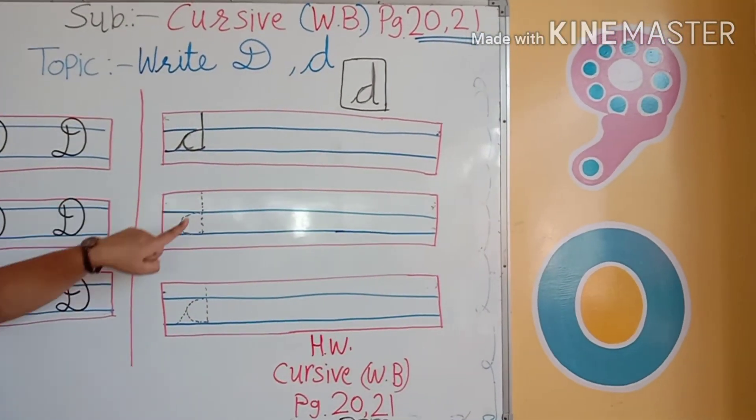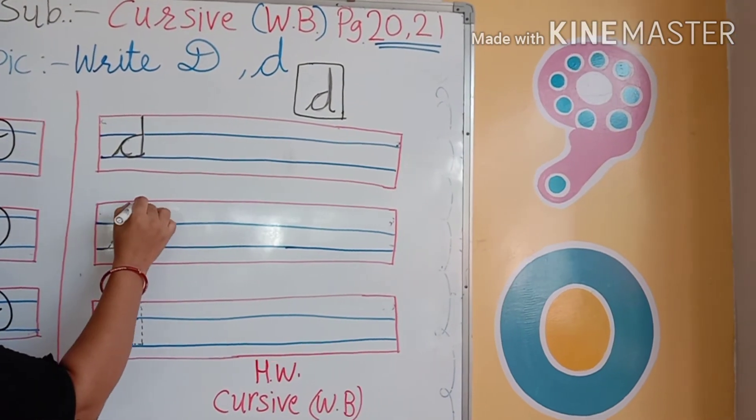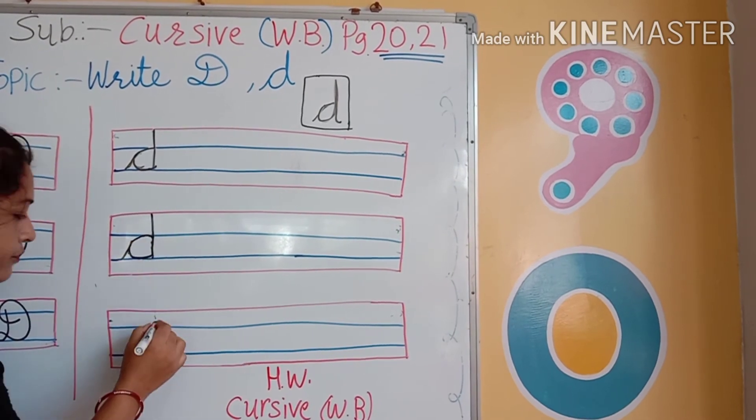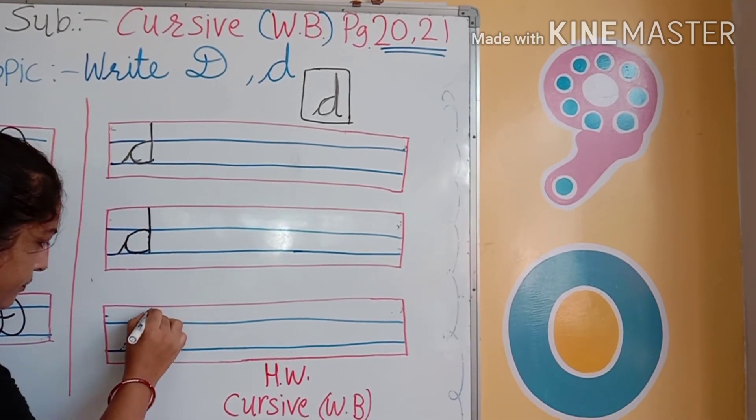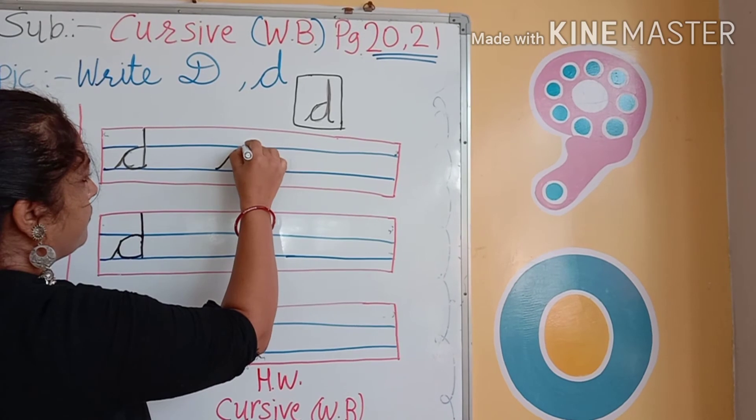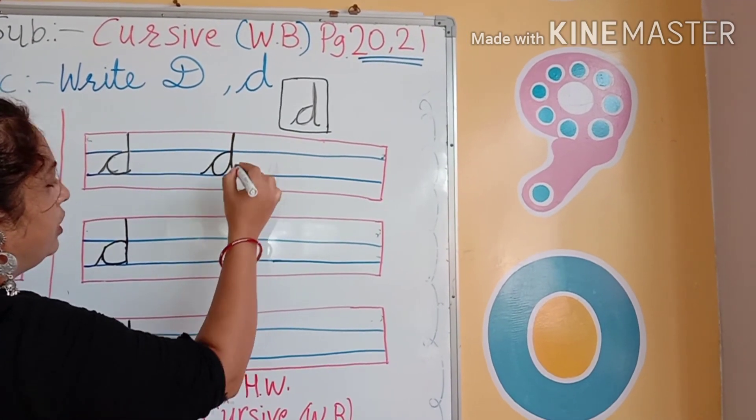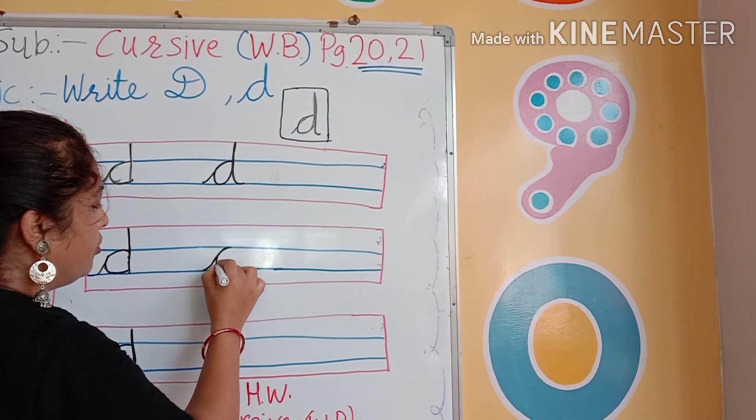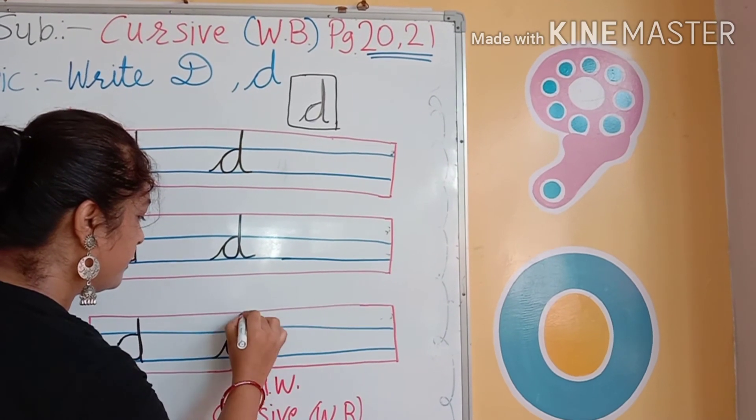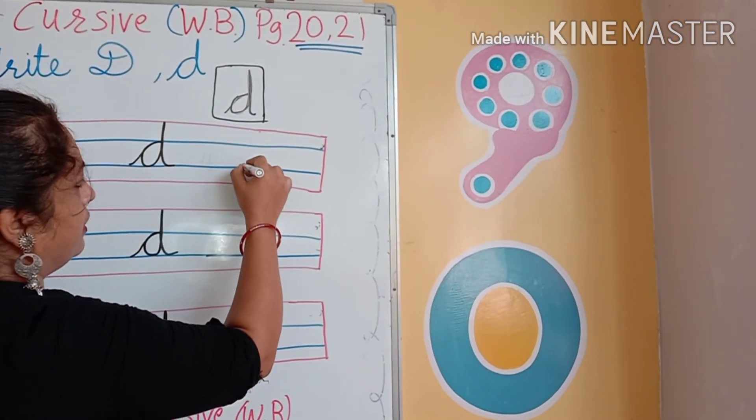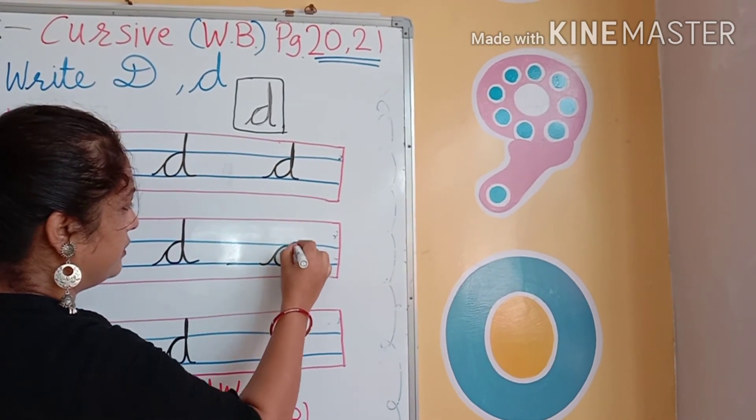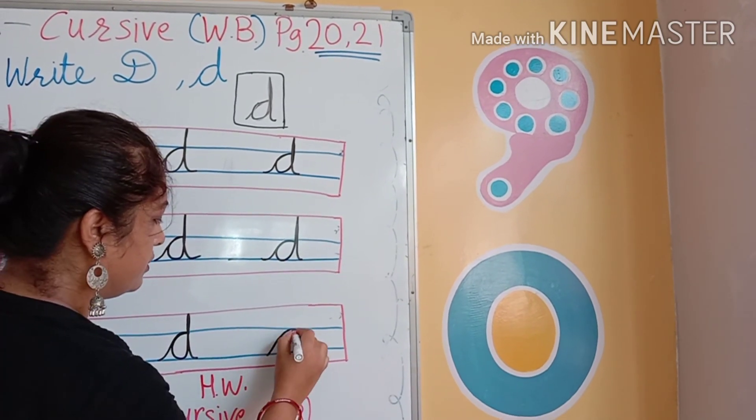Now we will write here small d. So let's start it. First of all we trace small d. Small d. Now we write here without dots. Small d.